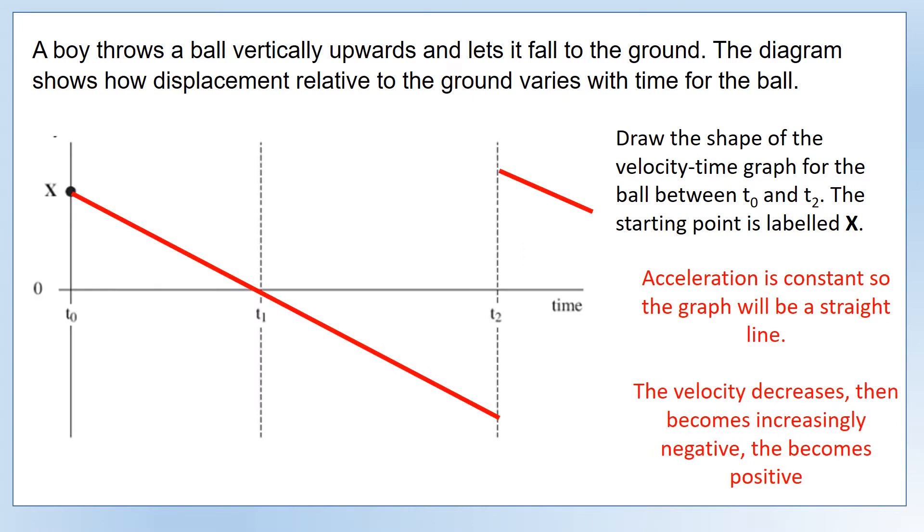So let's now draw that. This is what we'd expect to see: it decreases to zero at t1 when it's reached its maximum height, then becomes increasingly negative down to t2 where it hits the ground. But if we were to continue drawing it, you can see it would jump up to being positive again as it bounces back upwards after it hits the ground.